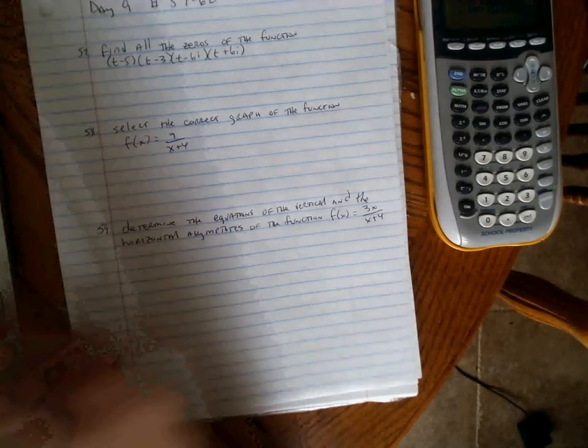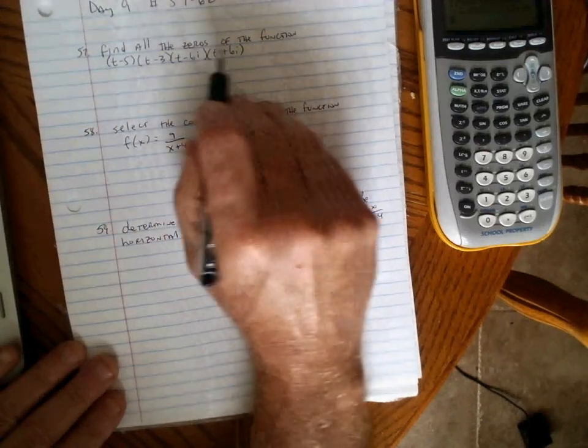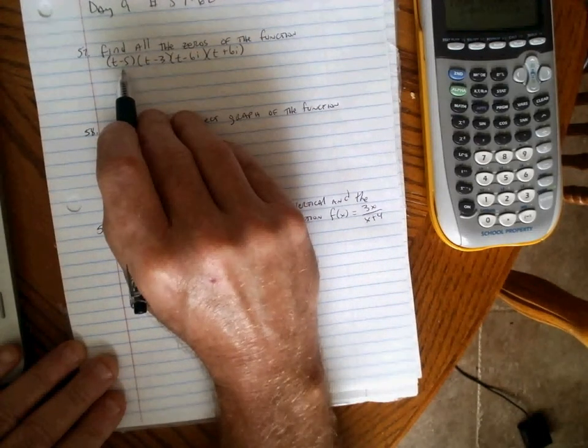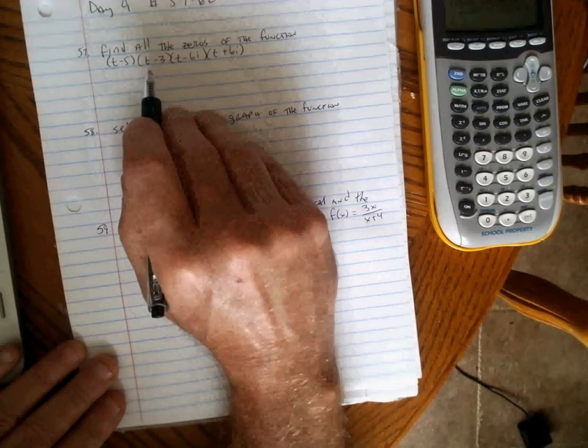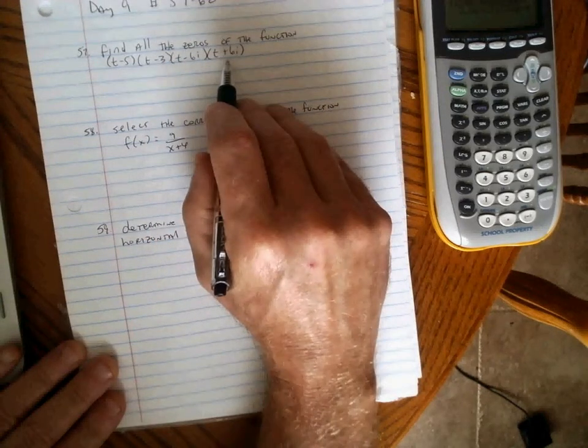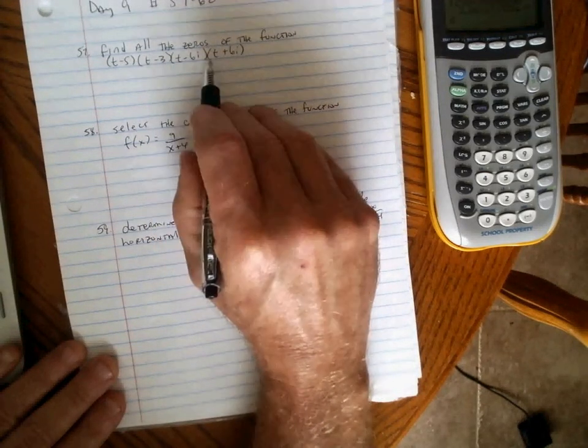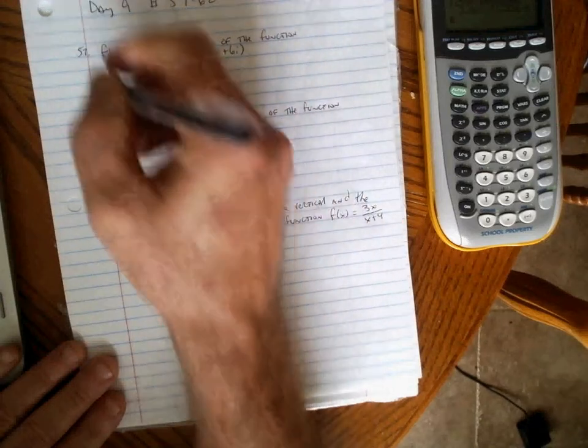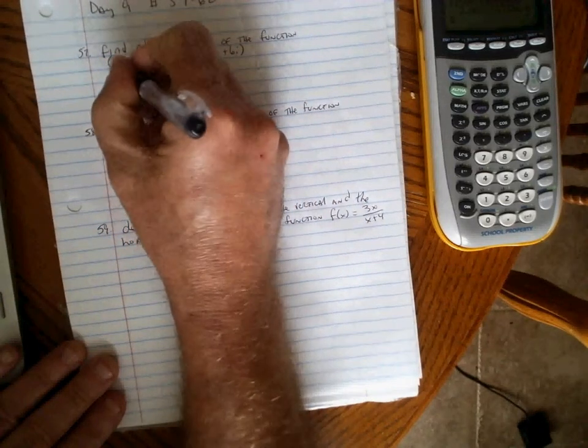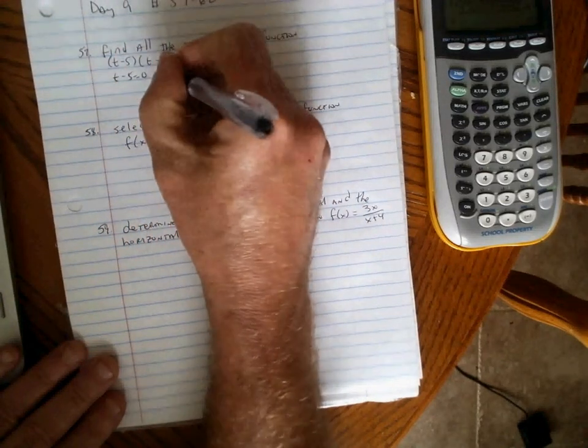Problem 57 tells us to find all the zeros of the function (t-5)(t-3)(t-6i)(t+6i). This is already in factored form, so we can set the factors equal to zero and solve. This is about as easy as it can get.